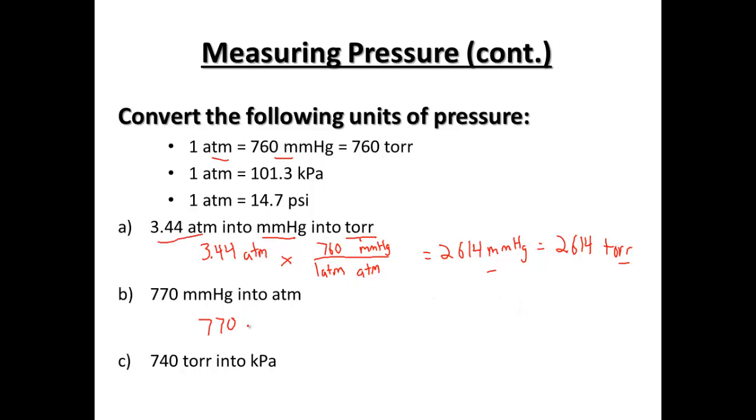4b, 770 millimeters of mercury is our starting point. This time we want to go from millimeters of mercury to atmospheres. So atmospheres on top, millimeters of mercury on the bottom. One atmosphere equals 760 millimeters of mercury. In this case, it equals about 1.01 atmospheres.